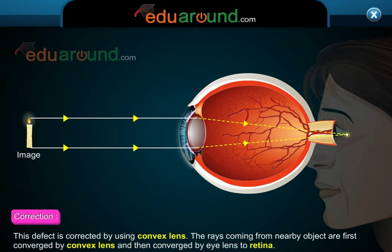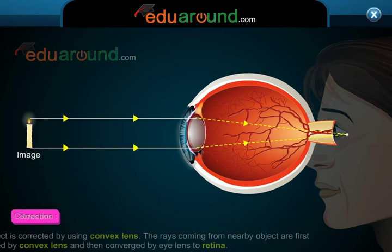This defect is corrected by using a convex lens. The rays coming from a nearby object are first converged by the convex lens and then converged by the eye lens onto the retina.